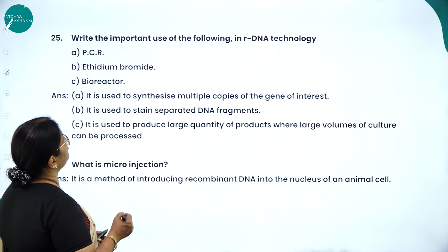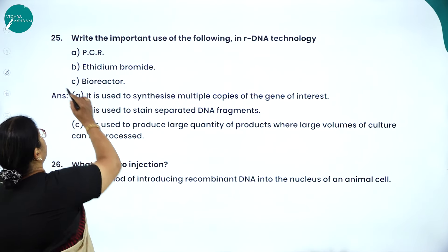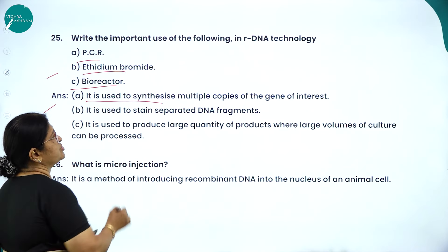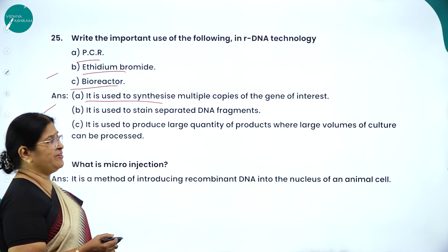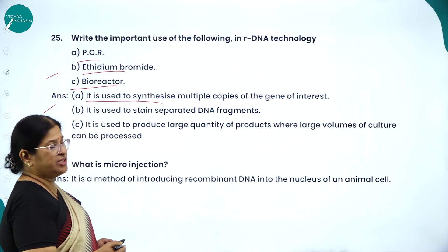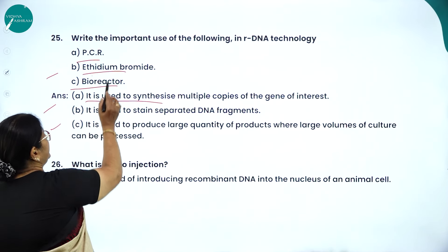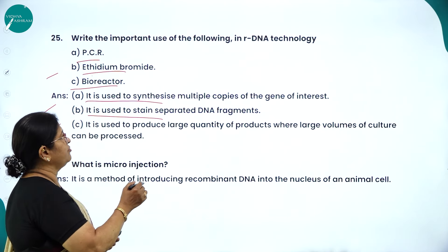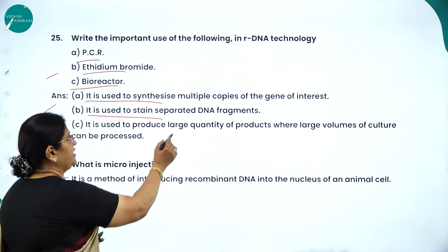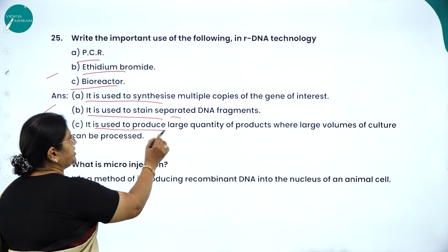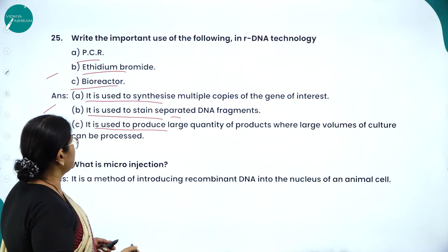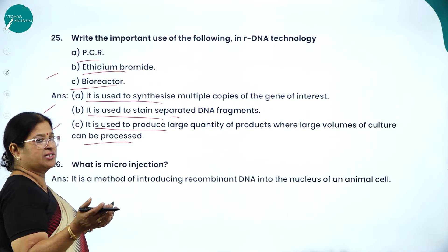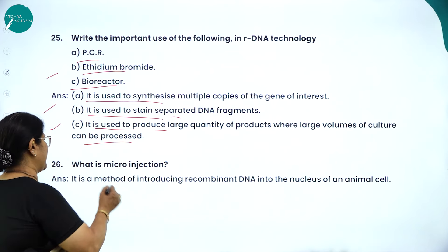Important uses in R-DNA technology: PCR is used to synthesize multiple copies (gene amplification) of the gene of interest. Ethidium bromide is a stain used in gel electrophoresis to visualize separated DNA fragments. Bioreactors are used to produce large quantities of products where large volumes of culture — around 100 to 1000 litres — can be processed.